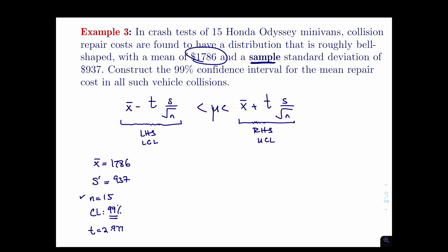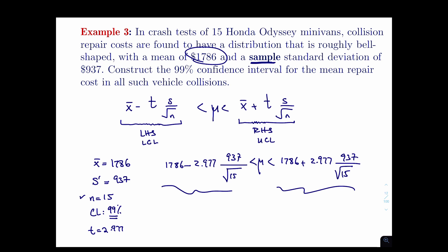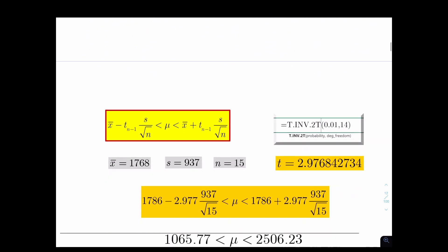Now I have all the values I need. The left-hand side will be 1786 minus 2.977 times 937 divided by the square root of 15. The right-hand side is the same thing with a plus instead of a minus. You compute both sides and that's your final answer, which I'll show on the next page.